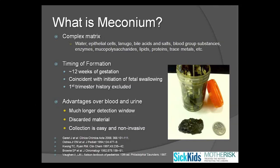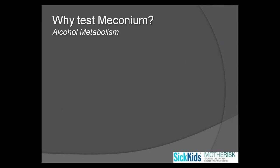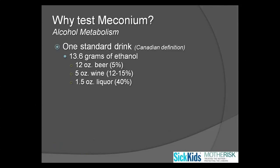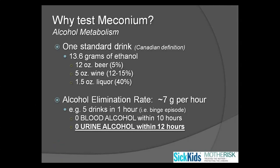Some advantages over blood and urine are the longer detection window, which is a major advantage, and also that meconium is a discarded material, so collection is relatively easy and non-invasive. The reason we look at testing meconium is because of the transient nature of alcohol in conventional matrices. One standard drink contains about 14 grams of alcohol or ethanol, and our bodies eliminate alcohol at about 7 grams per hour. So someone who has a binge episode — say about 5 drinks in an hour — their urine can be negative for alcohol within 12 hours. This is a very, very small window of detection.